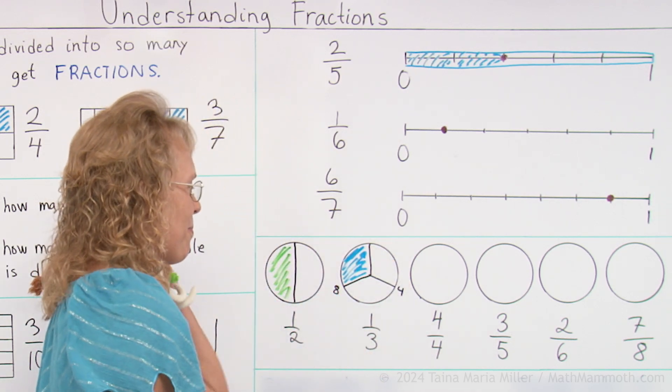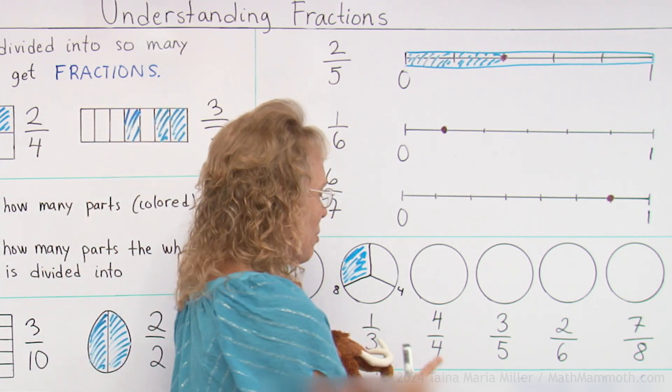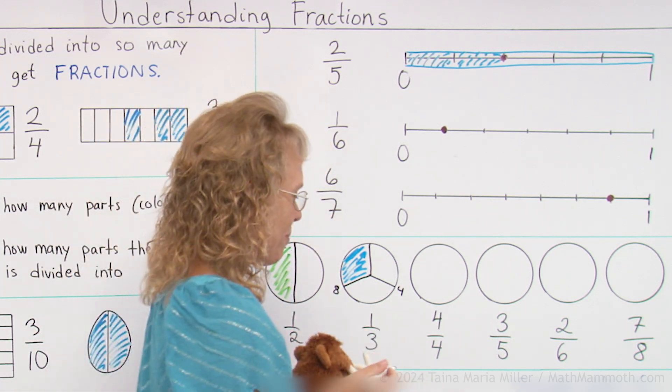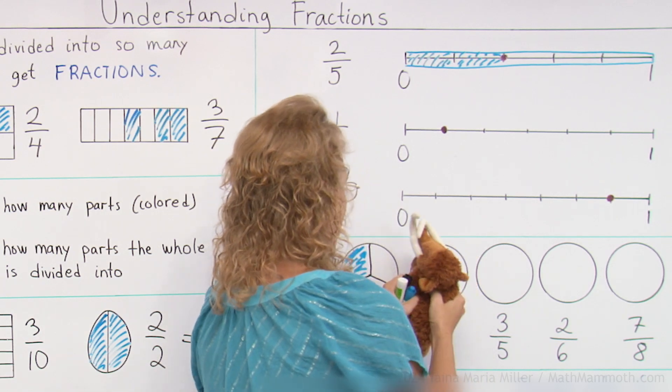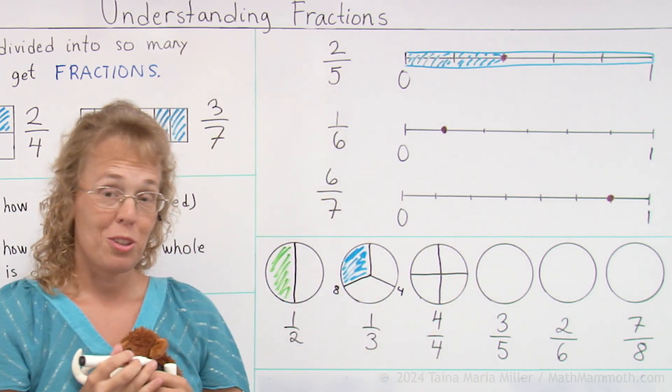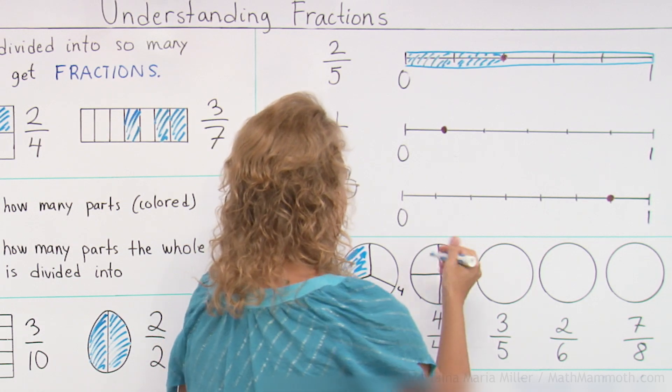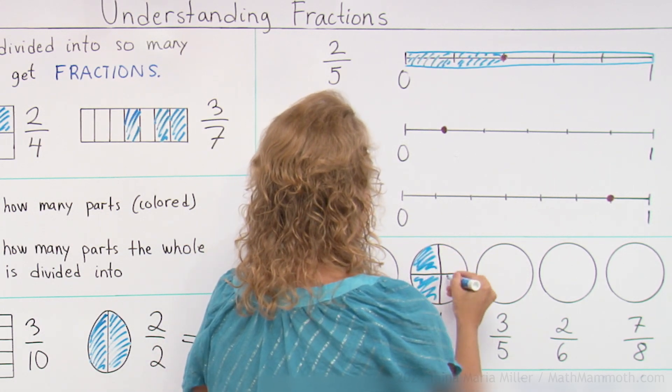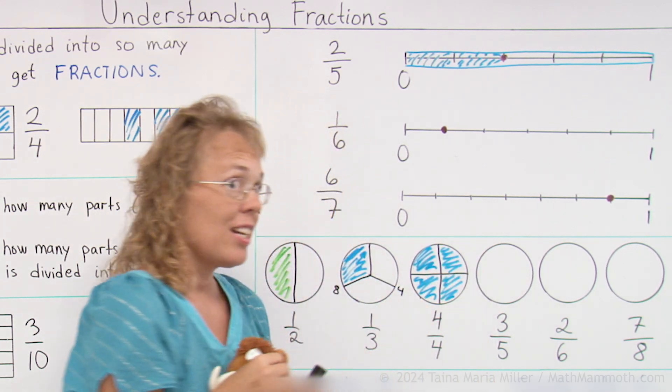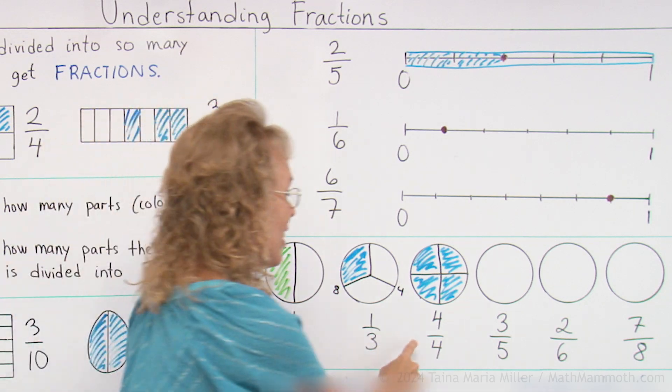Okay Matthew, your turn. For the next one, we need fourths. Fourths are pretty easy. You just draw a cross inside. Four fourths means I color every one of them. This is again one whole pie. So this is equal to one.